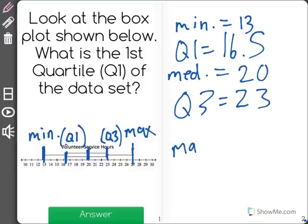And again, the last value would be the maximum, which is equal to 27. Now, this question is asking just about the first quartile, which is the beginning of the box plot. In this case, the answer is 16.5.